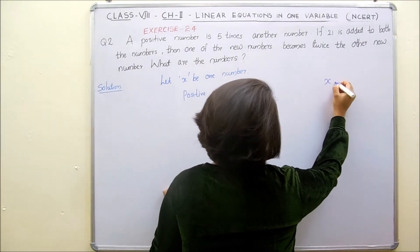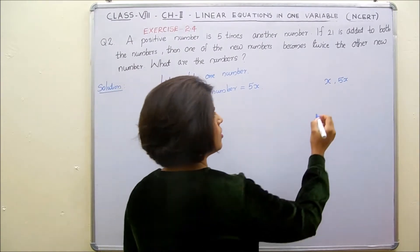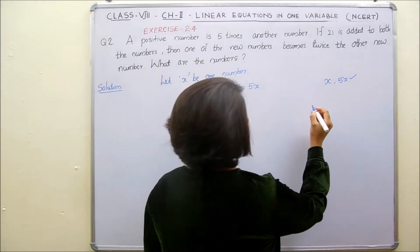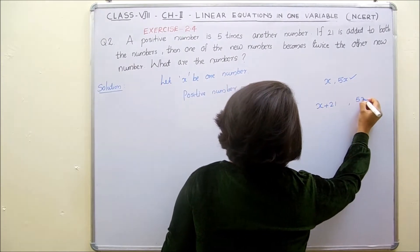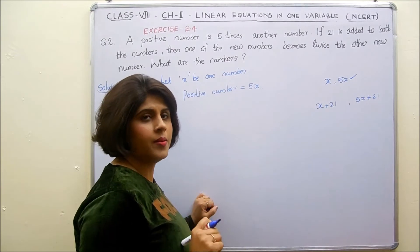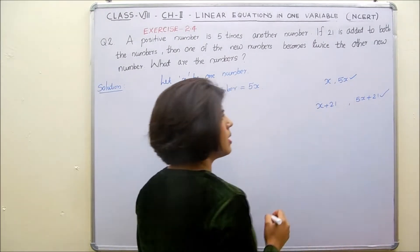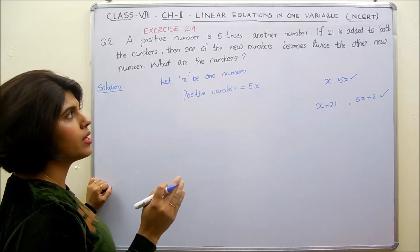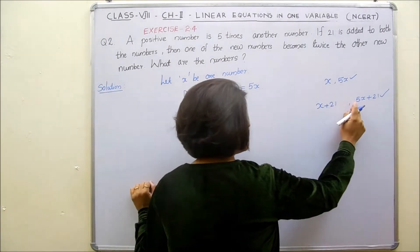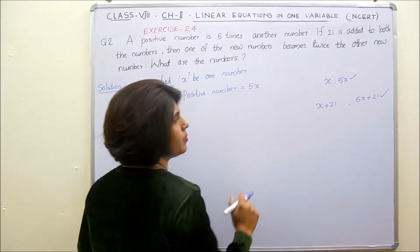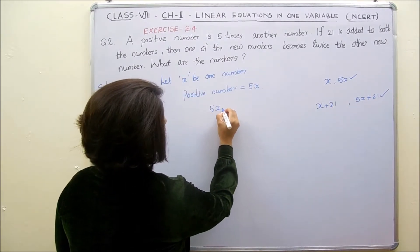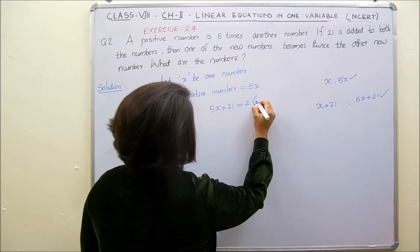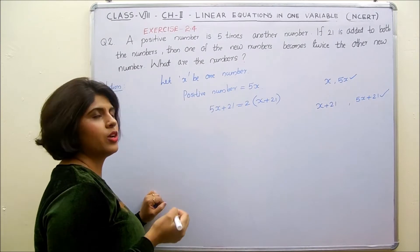Out of x and 5x, obviously 5x is bigger. And if we are adding 21 to both numbers, then one is x plus 21 and the other would be 5x plus 21, which is still bigger. So it is given that one of the new numbers becomes twice the other new number. The bigger number would equal twice the smaller number. So we can form an equation: 5x plus 21 equals 2 times x plus 21. Now we got a linear equation.